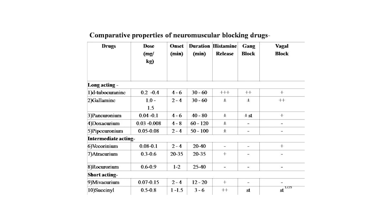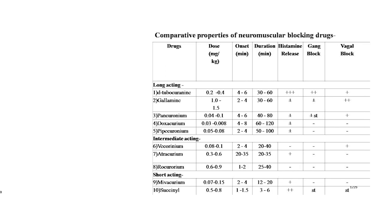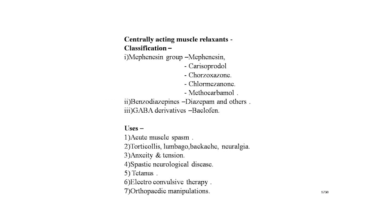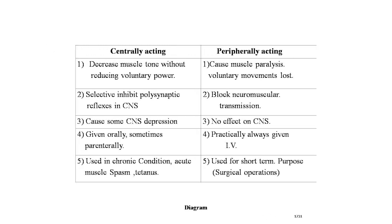Centrally acting muscle relaxants are classified as: mephenesin group — mephenesin, carisoprodol, chlorzoxazone, chlormethiazole, methocarbamol; benzodiazepines — diazepam; and GABA derivatives — baclofen. Uses of centrally acting muscle relaxants include: acute muscle spasm, torticollis, lumbago, neuralgia, anxiety and tension, spastic neurological disease, tetanus, electroconvulsive therapy, and orthopedic manipulations.